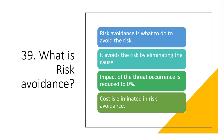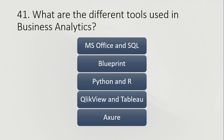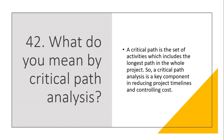Question 39: What is risk avoidance? Risk avoidance is what to do to avoid the risk. It avoids the risk by eliminating the cause. The impact of the threat occurrence is reduced to 0% and cost is eliminated in risk avoidance. Question 40: What is BRD? A Business Requirement Document is a formal contract between the client and the organization for the development of a specific product.